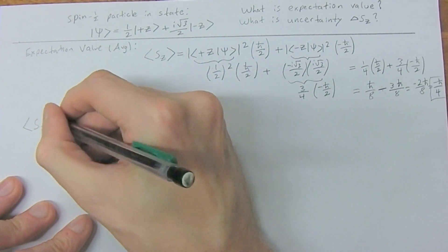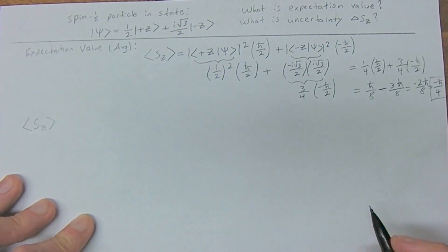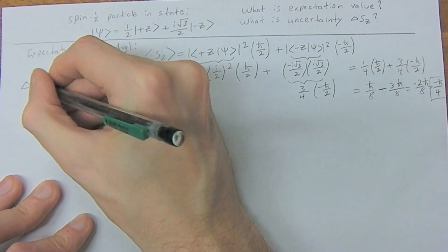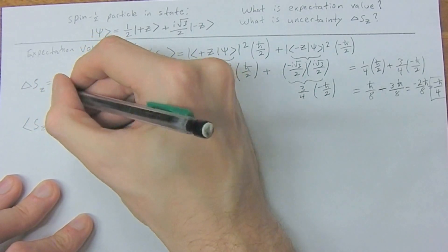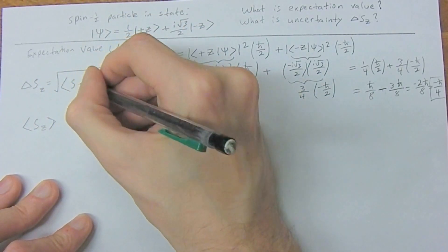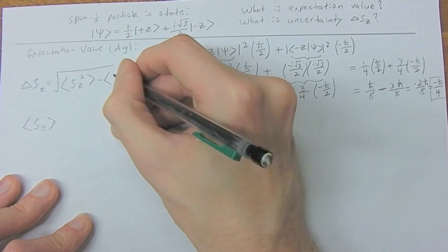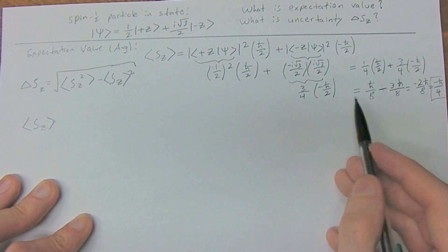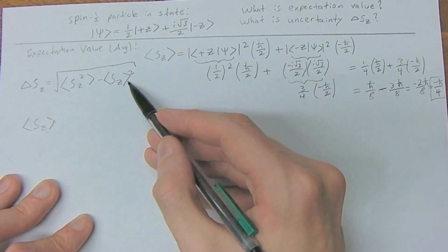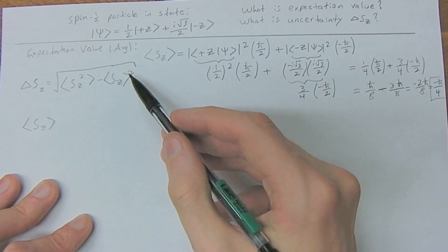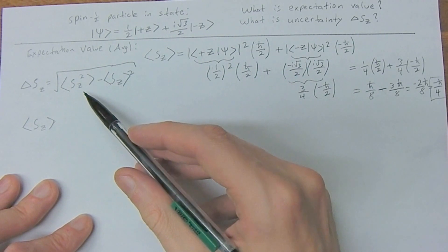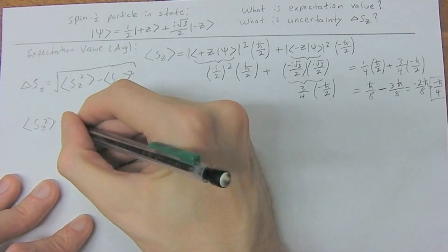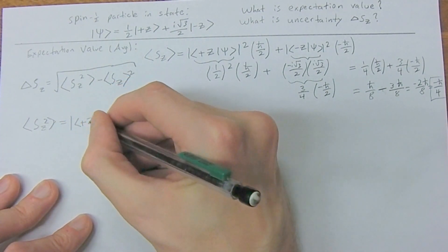This is needed to get our uncertainty. Keep in mind the uncertainty formula is: delta S_z equals the square root of ⟨S_z²⟩ minus ⟨S_z⟩ squared. We've just found ⟨S_z⟩, so the only thing left from that first term is to square it. Now we want to find ⟨S_z²⟩.